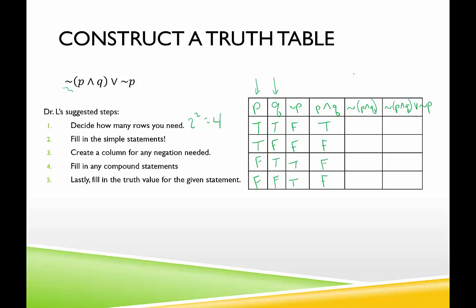Next, we negate the conjunction p and q. Whatever truth value it has, we take the opposite: false, true, true, true. For the final column, we have a disjunction of not p and q — looking at those two columns. False or false is false; false or true is true; true or true is true; true or true is true. That completes this truth table.